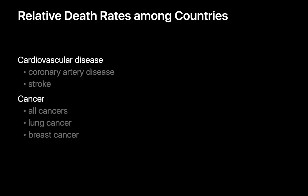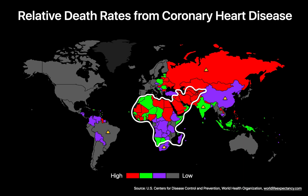Now let's look at relative death rates from five other causes generally perceived to be amongst the leading killers in high-income countries: coronary artery disease, stroke, all cancer, lung cancer, and breast cancer. If we look at coronary heart disease — the number one cause of death in the U.S. — it's readily apparent that relative death rates from coronary heart disease are substantially higher in most low-income and middle-income countries. Relative death rates are two and a half times higher in Africa, twice as high in India, and almost three times higher in Russia than in the U.S.